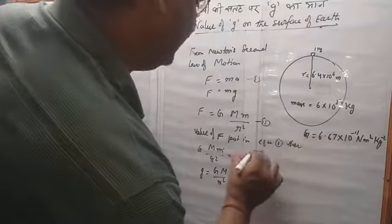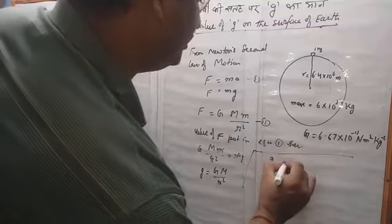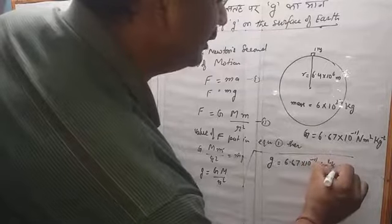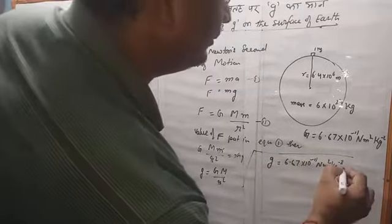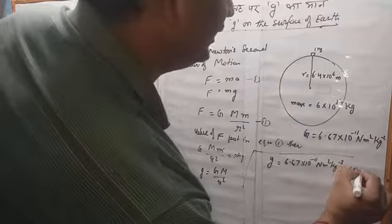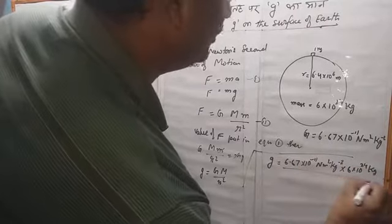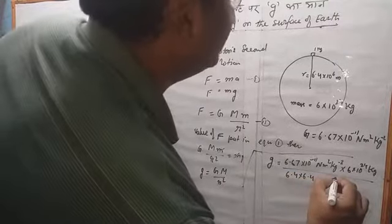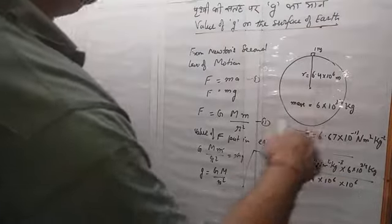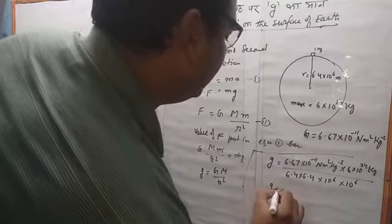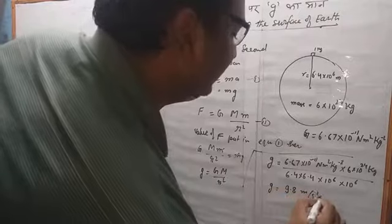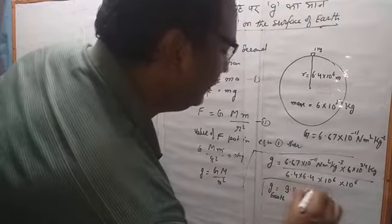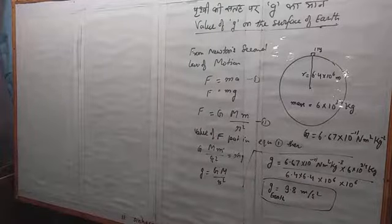Now we put all the values in. Small g equals 6.67 × 10⁻¹¹ N·m²/kg² multiplied by 6 × 10²⁴ kg, divided by (6.4 × 10⁶)² m². This g is for Earth, so we can write it as g_earth.